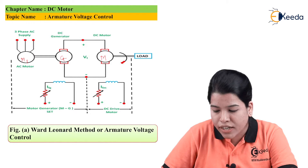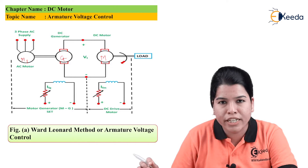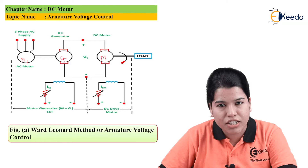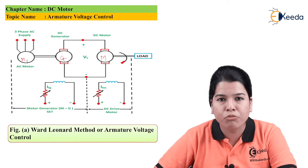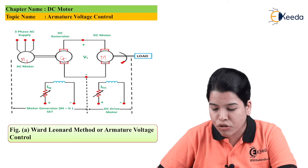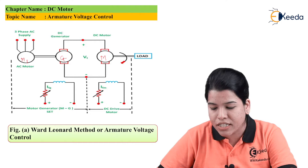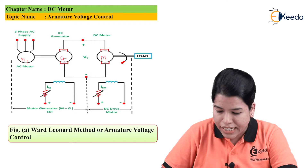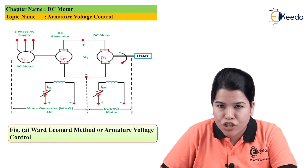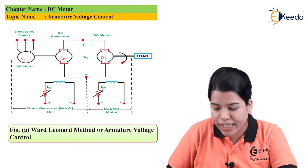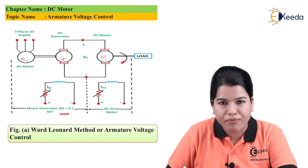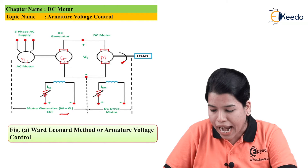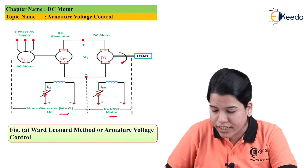The generator output is connected to the motor whose speed is to be controlled. The generator converts mechanical energy into electrical energy, which acts as the input to our DC motor, which in turn converts electrical energy into mechanical energy given to the load. The combination of the AC motor and generator is called the MG set, while the motor and load combination is called the DC drive.